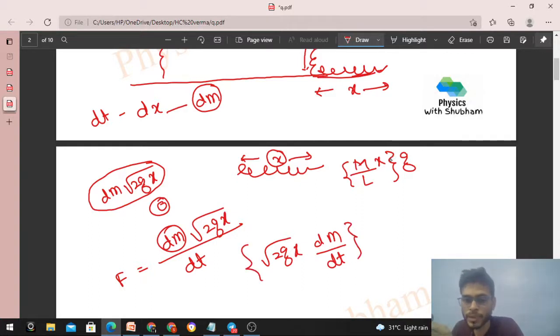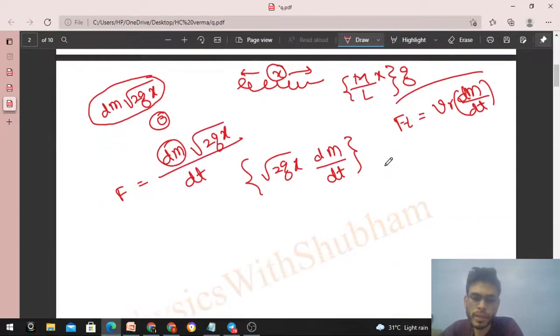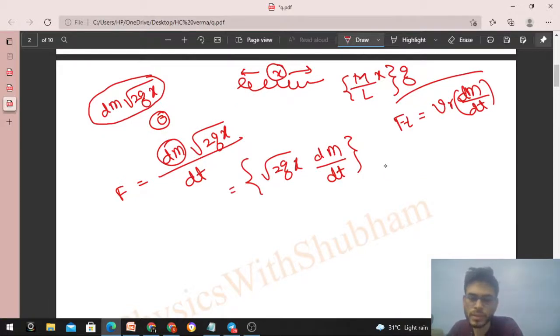Joh dm mass ka chain hai usne itna force aur laga diya. So aap dm by dt - aap dhekho under root 2gx into dm by dt. Agar main is variable mass system ke terms me padha tha - means ek variable mass system ke terms me bhi hum study karate hai, joha pe hum kehte hai ki ek upthrust force lagta hai this is variable mass system. Joha pe joh aapka body hai woh continuously increase karita ja raha - joh mass continuously increase ho raha is a country system me. So uha pe joh thrust force laga, that is relative velocity into dm by dt - that is the rate of change of mass.